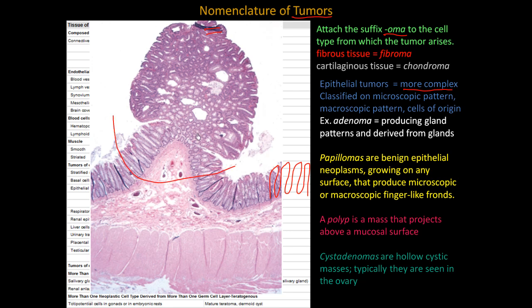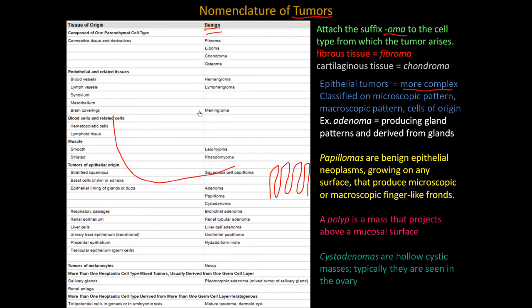Usually these polyps are benign, but they can be malignant and need to be removed. Cystadenomas are holocystic masses typically seen in the ovary. If you have a cystadenoma, it's a holocyst.